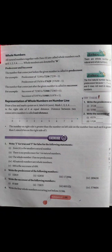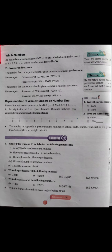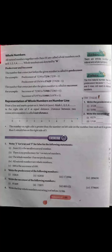5 se pehle kya aata hai? 4 aata hai — so 4 is the predecessor of 5. This is what predecessor means: the number that comes before the given number. For example, the predecessor of 7239 would be 7238.